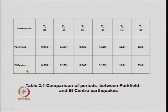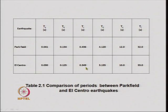For the Parkfield and El Centro earthquakes, the T_A value was 0.03 and 0.041 respectively. T_B was 0.134 for Parkfield and 0.125 for El Centro. T_C was 0.436 versus 0.349, and T_D was 4.12 for Parkfield versus 3.135 for El Centro. T_E and T_F were more or less the same for the two earthquakes, especially T_F.